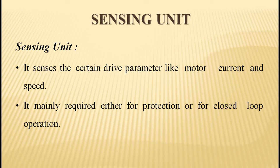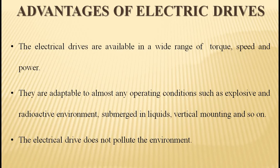The sensing unit continuously senses the output from the motor — which may be motor current or speed — and feeds it back to the control unit. The control unit then controls the output of the modulator, which in turn controls the motor. This is how closed loop operation is achieved. These are the main components used in an electric drive.